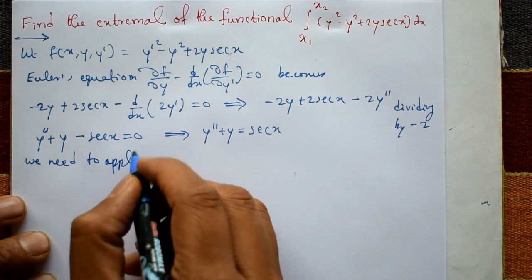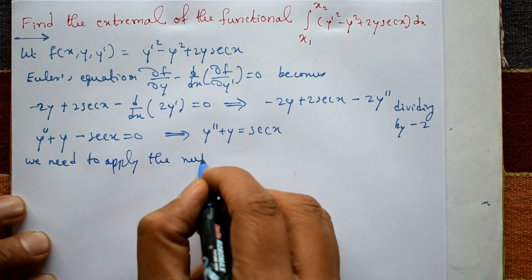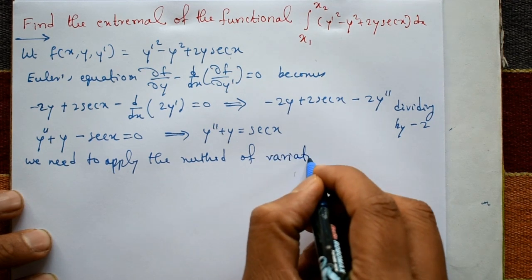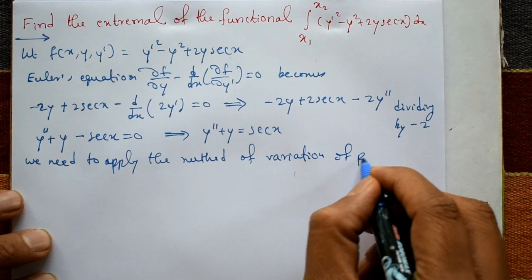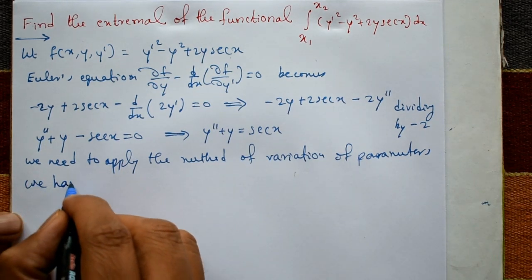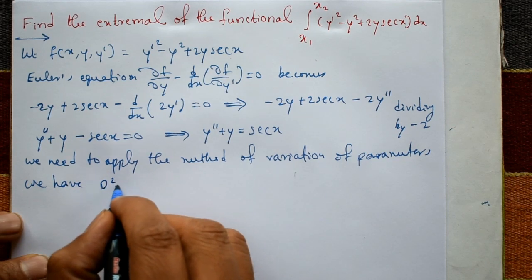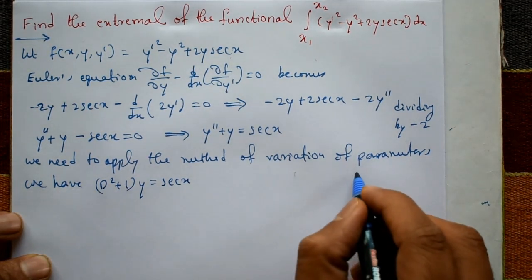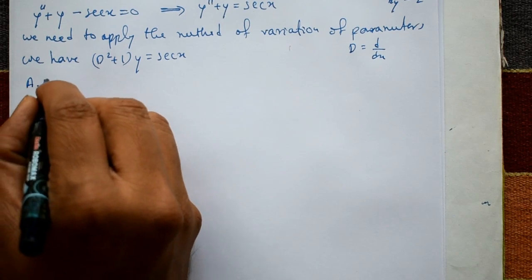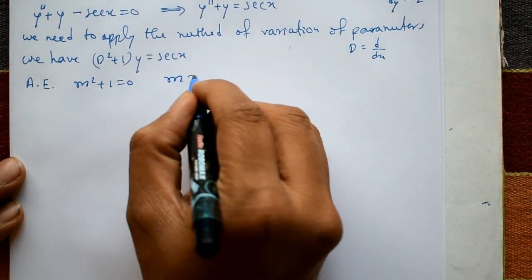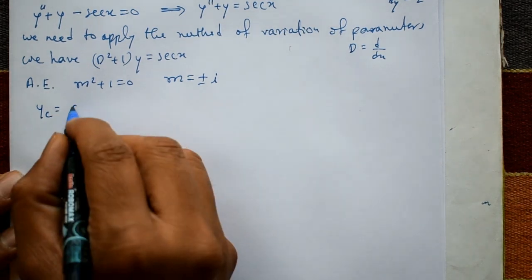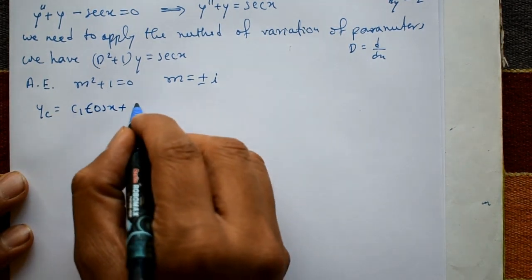We need to apply the method of variation of parameters to solve this equation. Writing it as (D² + 1)y = sec(x), where D = d/dx. The auxiliary equation is m² + 1 = 0, giving m = ±i — complex roots.